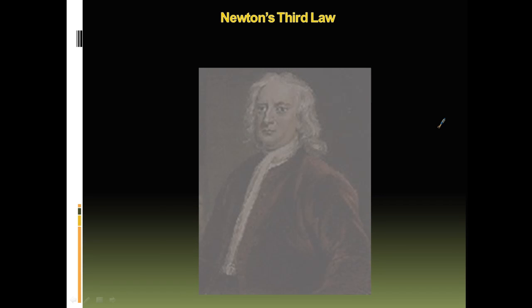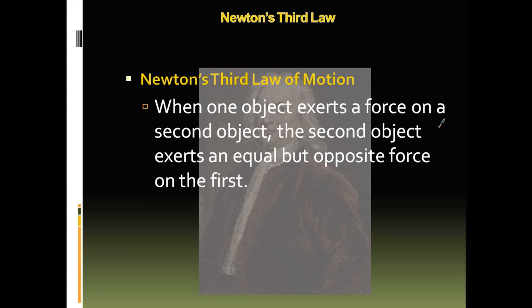Newton's third law of motion says: When one object exerts force on a second object, the second object exerts an equal but opposite force on the first. The force of A on B is equal to the force of B on A. Even though they're different sizes, they still have the same force because of Newton's third law. It's equal and opposite forces.